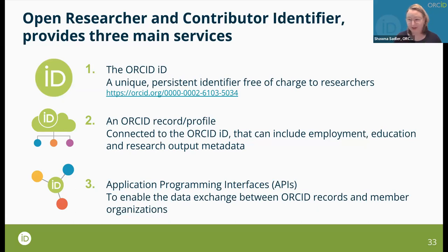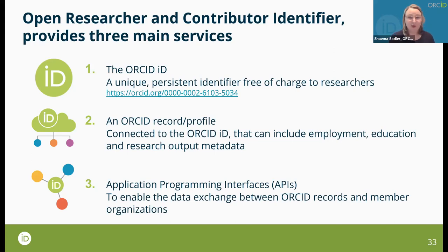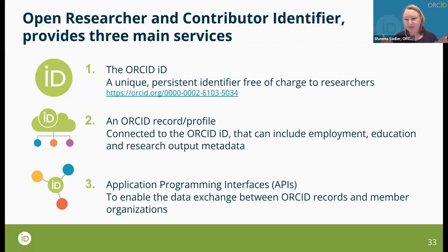ORCID provides three services. First, the unique ID — a free identifier assigned to a researcher. To qualify, you must be a human being over the age of 18 — so this includes citizen scientists, patients who want to participate in research, anyone. Second, a profile or record that captures your professional research activities. Third, an API that creates the technical infrastructure to exchange data with different systems — which is a whole other webinar.